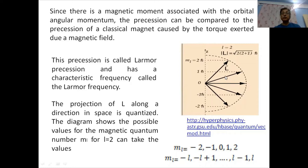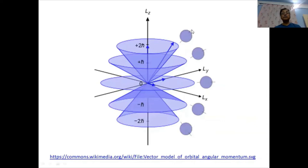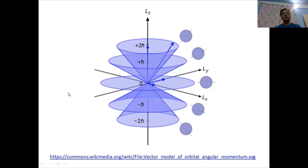For l = 2, m_l will range from −2 to +2: that is, −2, −1, 0, +1, and +2. The angular momentum has space quantization whose projection on any given axis will be, for l = 2, these values. The atom's angular momentum can have only certain orientations allowed in space. The projections on the axis will be +2ℏ, +ℏ, 0, −ℏ, and −2ℏ. The angular momentum is quantized with only certain directions allowed in space, whose projection is given by −l to +l.